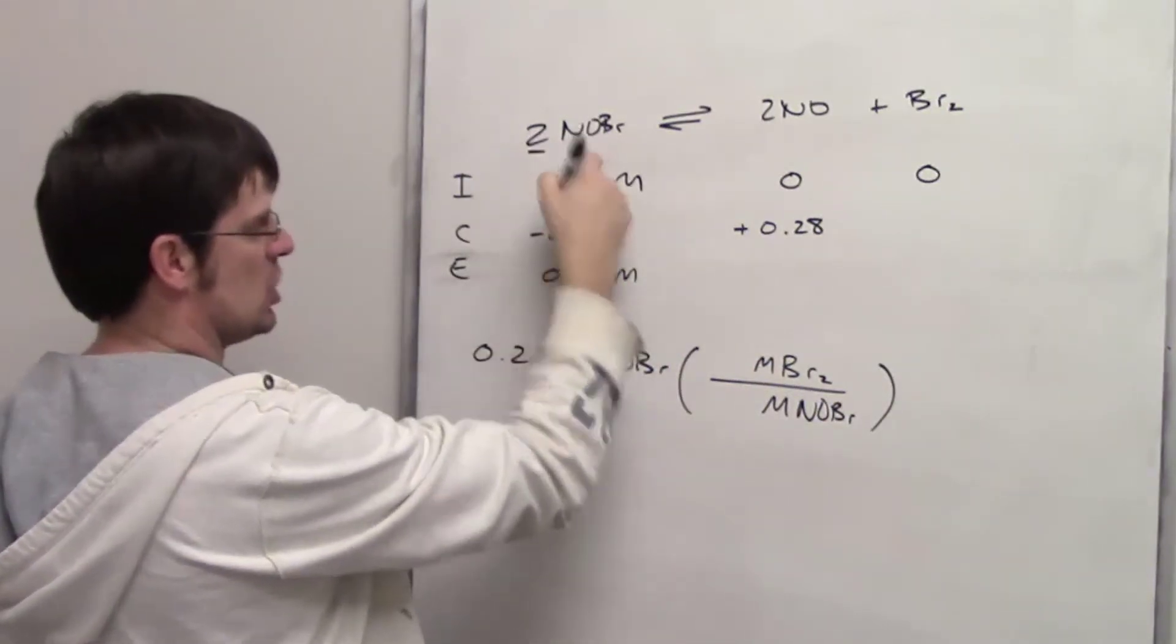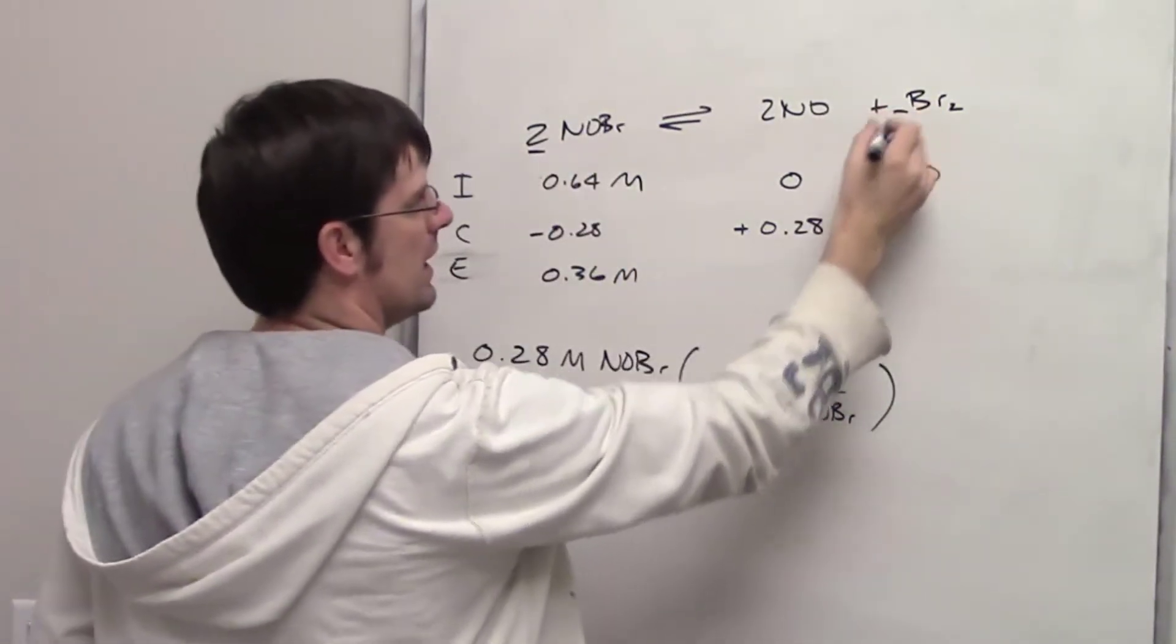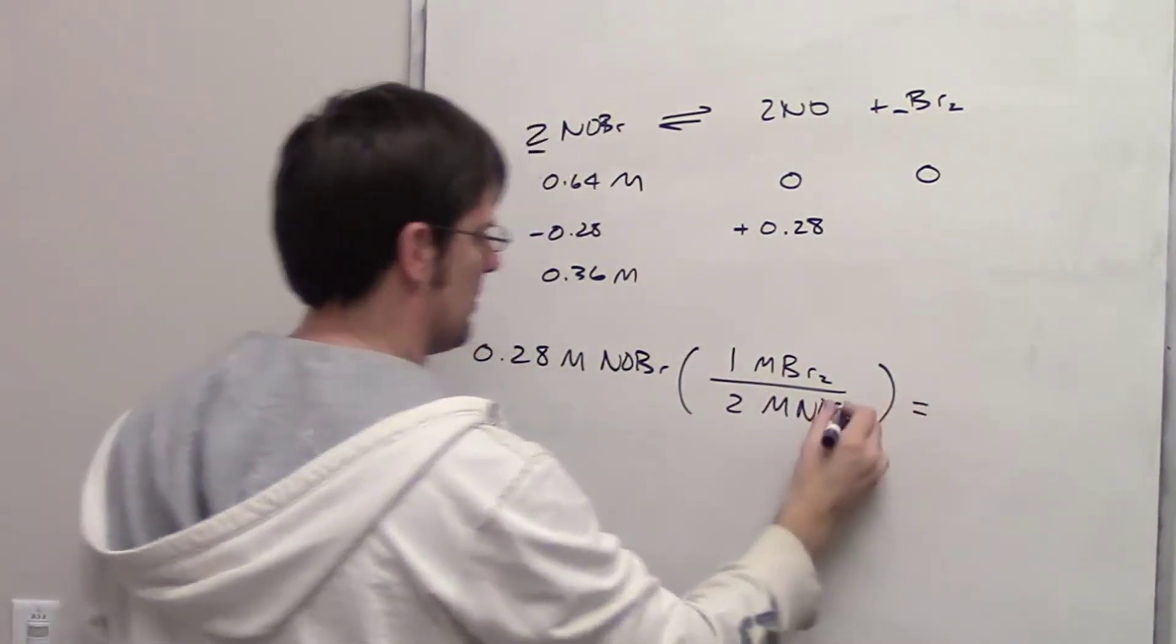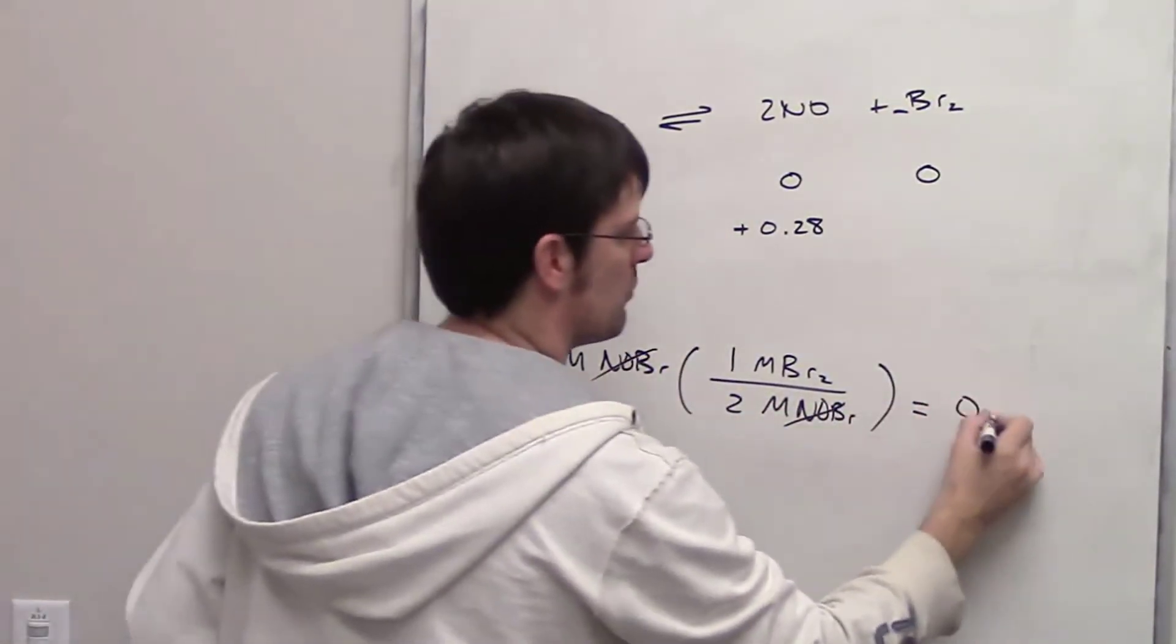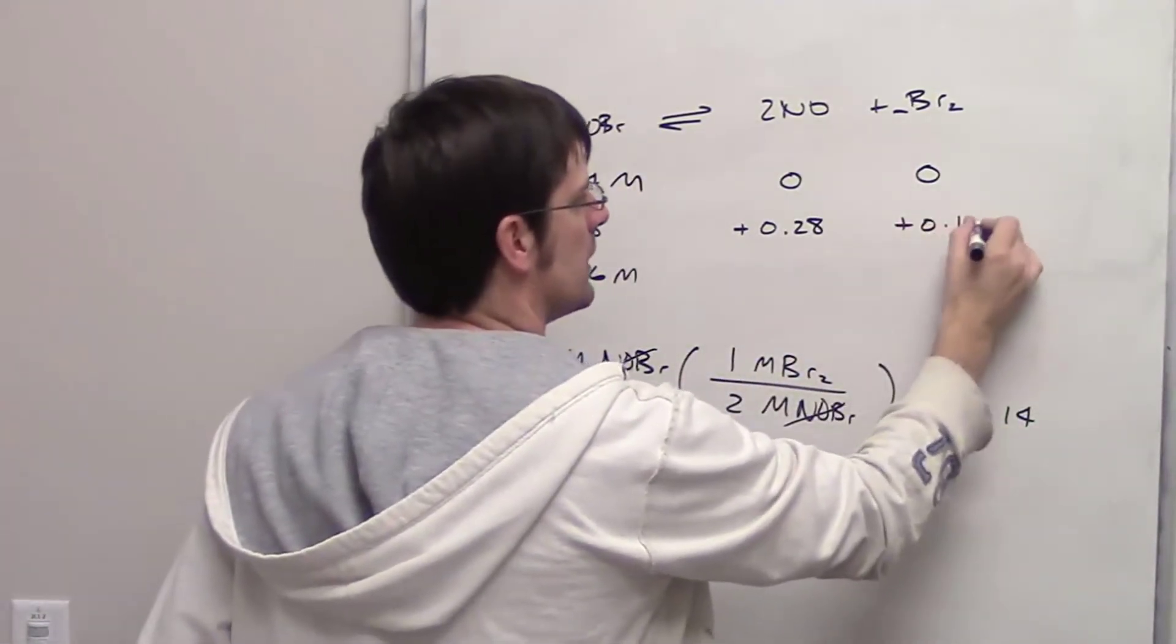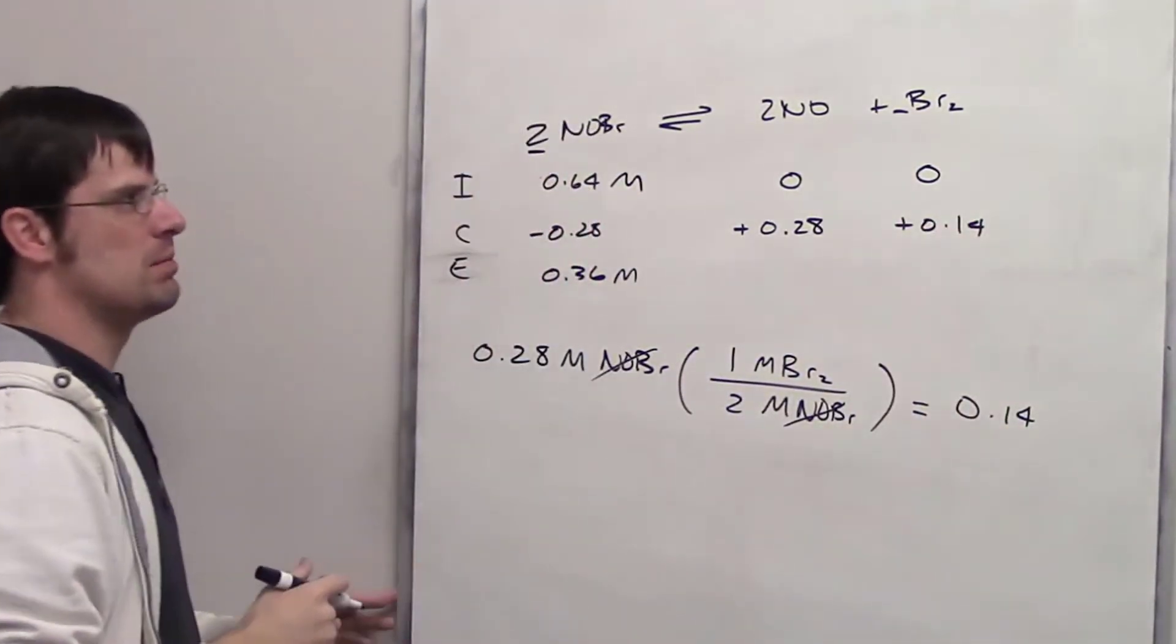Looking at the coefficients, there's a 2 in front of NOBr and a 1 in front of bromine. So this comes out to 0.14 as the change in molar equivalents of Br2.